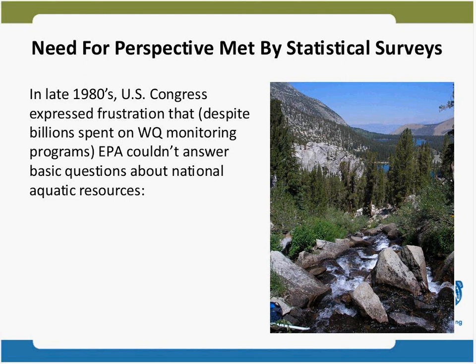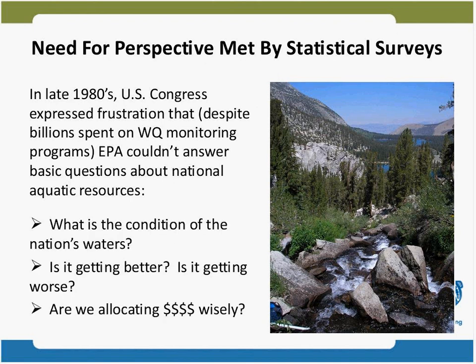Let's start with the need for why we did this in the first place. These surveys in the United States started in the late 1980s, part of an outgrowth of frustration in the U.S. Congress that despite spending billions of dollars on water quality monitoring, the EPA still wasn't able to answer basic questions about the condition of aquatic resources — questions like: what is the condition of the nation's waters? Is it getting better? Is it getting worse? And are we allocating our dollars wisely?